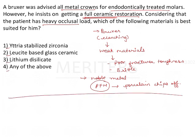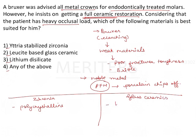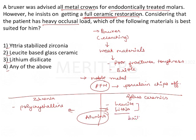Coming to the classification of ceramics, we have zirconia which is polycrystalline, and then we have glass ceramics — leucite-based, lithium-based, and alumina-based. Alumina is in between the physical properties of glass ceramics and zirconia ceramics. Leucite and lithium are too brittle in nature; therefore they cannot be used for high occlusal load because they will fracture.